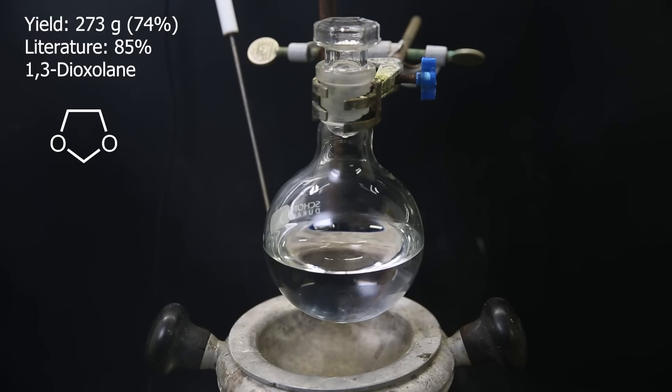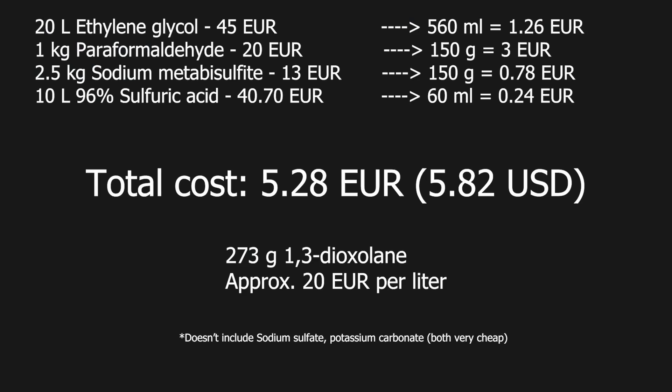Overall, it seems that the literature procedure works very well. Now I did a calculation to see how cheap it really is. This is what the reagents cost me and how much I used, which totals a cost of 5 euros and 28 cents. That makes the dioxalane cost about 20 euros per liter, which is cheaper than the online sources that I can find. Anyhow, that was it. See ya.